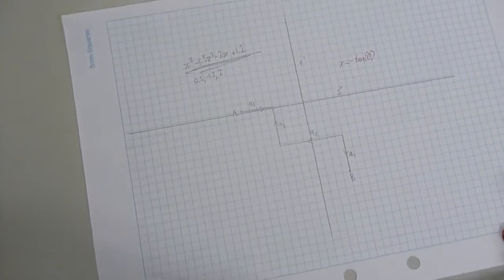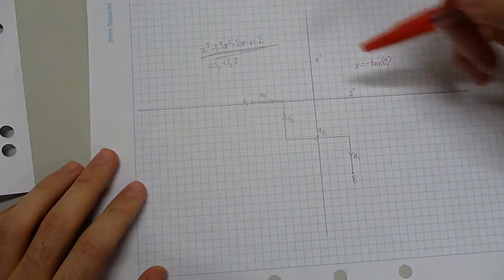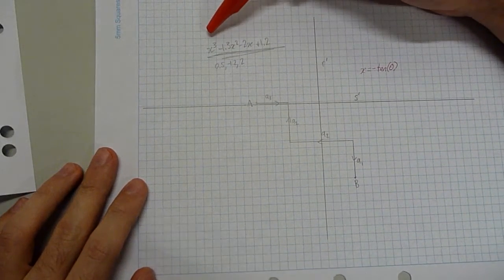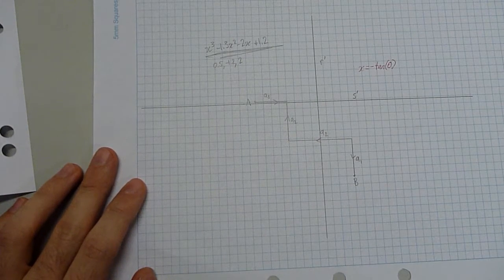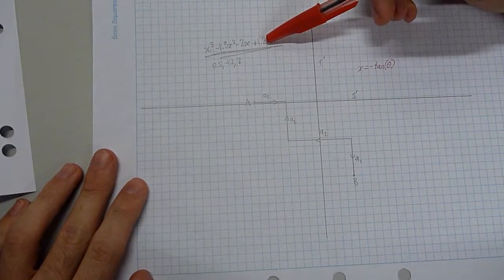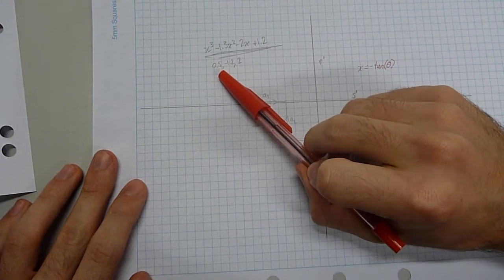So I've drawn up the start of the question. The cubic equation that we're going to be solving here is x cubed minus 1.3x squared minus 2x plus 1.2. And so I've already got the roots here.